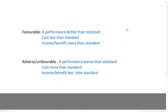Let's look at variances now. Remember, the variance is the difference between standard and actual performance. Variance could be two main types: it could be a favorable variance or it could be an adverse or unfavorable variance. A favorable variance is one that is liked; an adverse variance is one that is not liked.